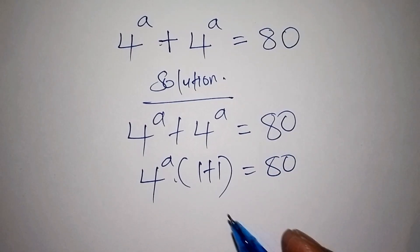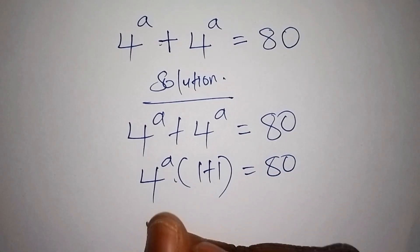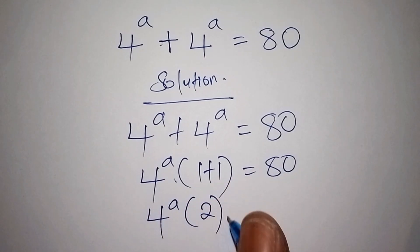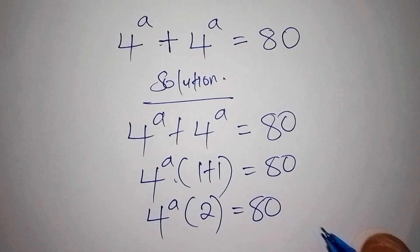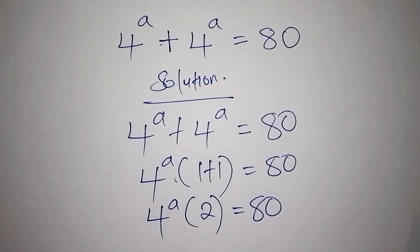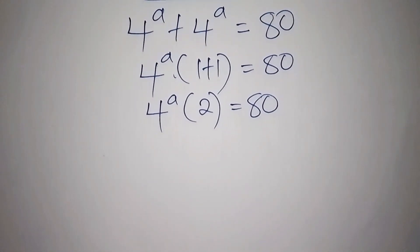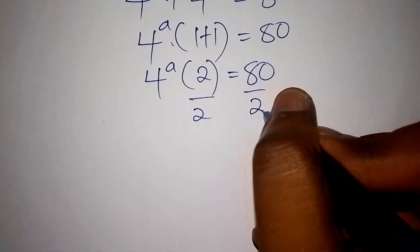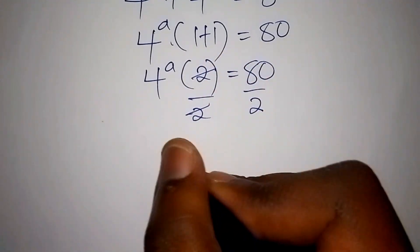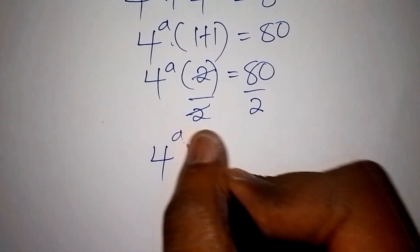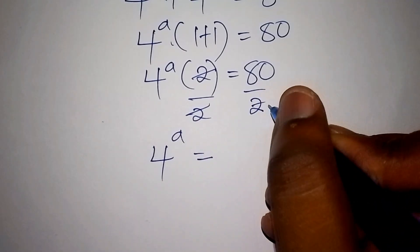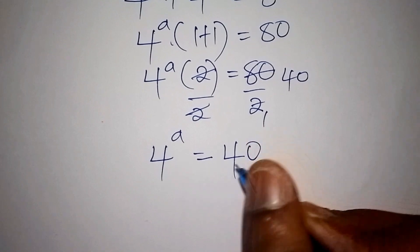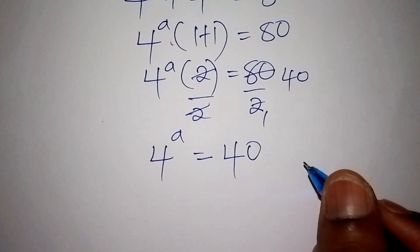Now we shall work out the number inside the bracket. We shall have 4 to the power of a times 2 is equals to 80. From there we shall divide both sides by 2 — so 2 divided by 2 shall cancel — giving us 4 to the power of a is equals to 40.